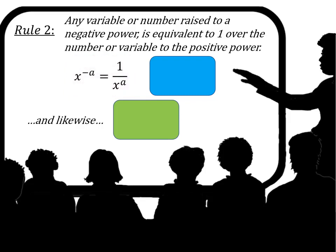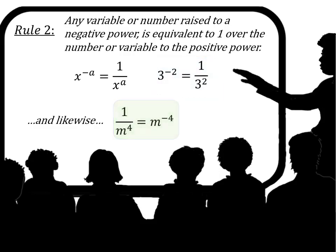Rule 2: any variable or number raised to a negative power is equivalent to 1 over the number or variable to the positive power. The variable x to the negative a power equals 1 over x to the positive a power. For example, 3 to the negative 2 power equals 1 over 3 squared, or 1 over 9. Likewise, 1 over m to the fourth power equals m to the negative fourth power.